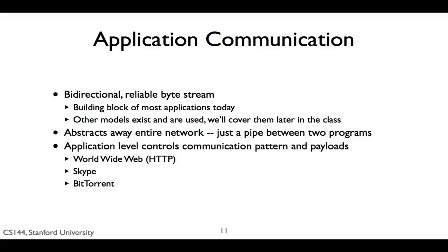In summary, we've seen the most common communication model of networked applications: a reliable bi-directional byte stream. This allows two programs running on different computers to exchange data, abstracting the entire network to a simple read-write relationship. We looked at three examples: the World Wide Web, BitTorrent, and Skype. The World Wide Web is a client-server model where the client opens a connection to a server and requests documents. BitTorrent is a peer-to-peer model where swarms of clients open connections to each other and exchange pieces of data, creating a dense network of connections. Skype is a mix of the two — when clients can communicate directly, they do so peer-to-peer, but sometimes they go through rendezvous or relay servers. A very simple abstraction — a bi-directional, reliable byte stream — can thus be used to create complex applications ranging from document retrieval to swarming downloads to IP telephony.